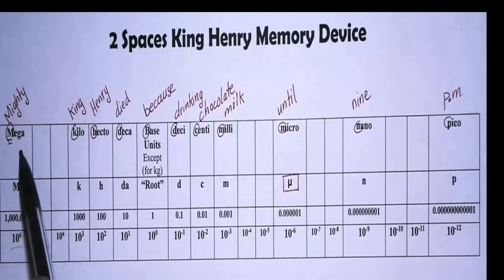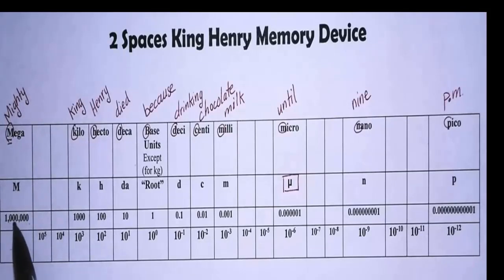For mega, we have one million, that is six zeros, so we have ten to the sixth. For kilo, we have one thousand with three zeros, ten to the third.